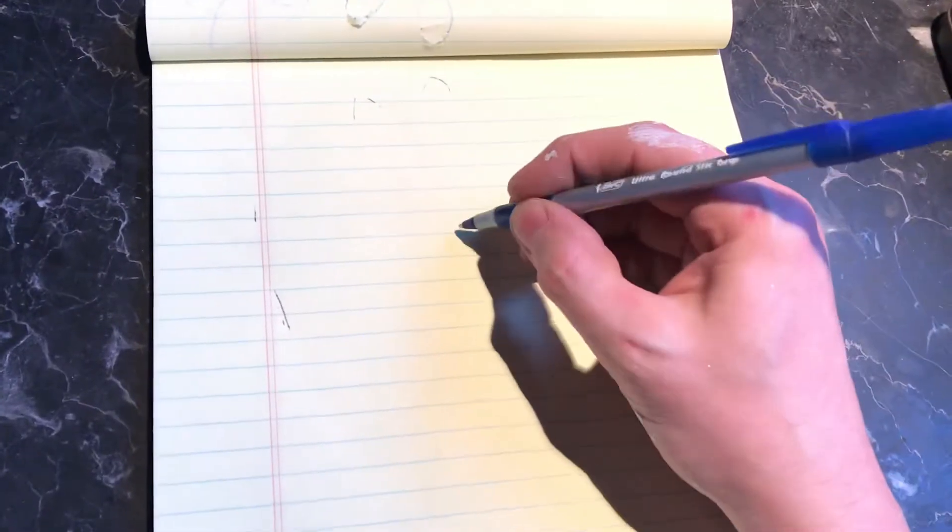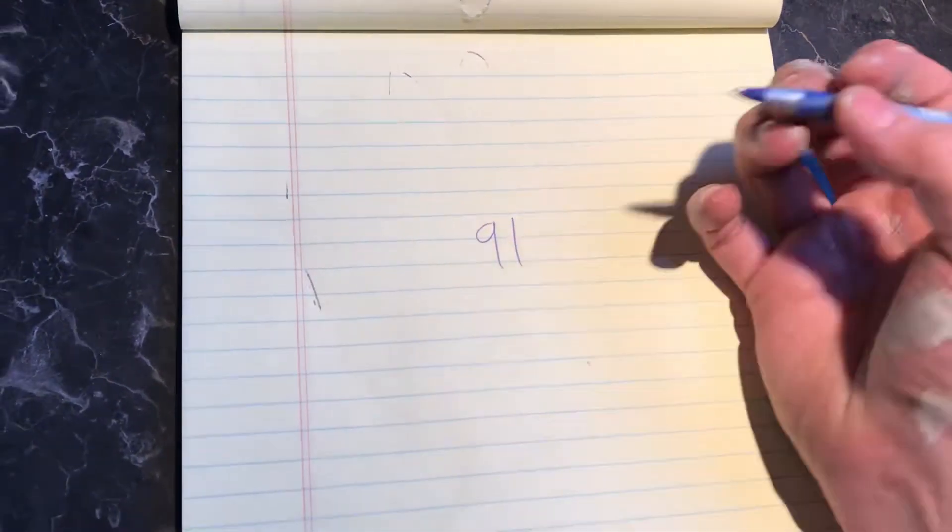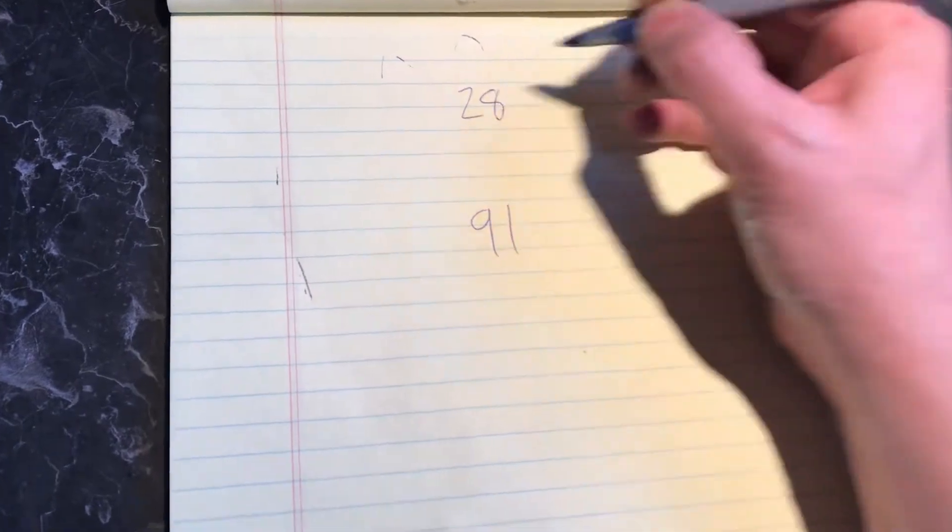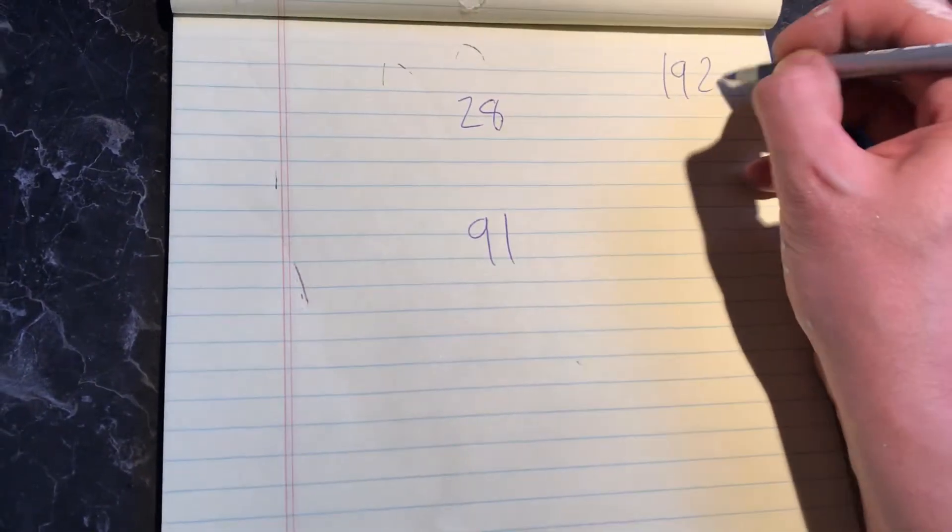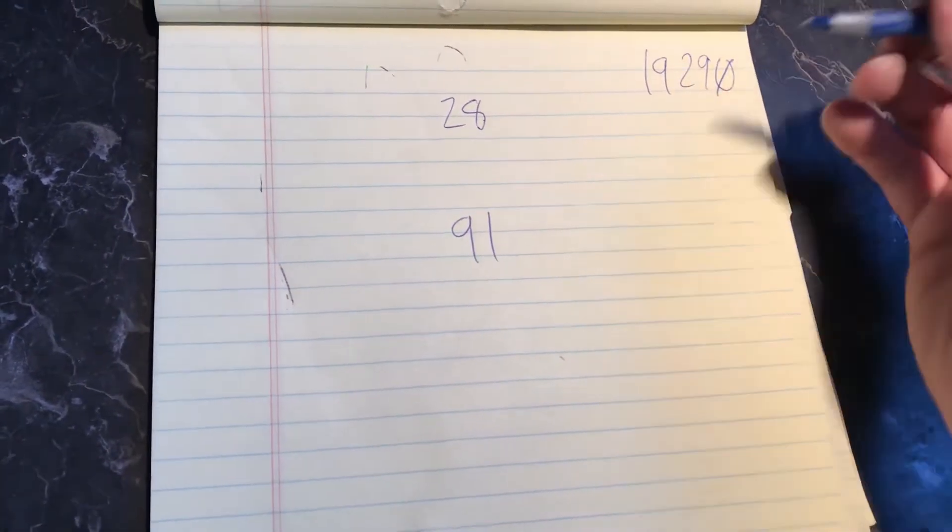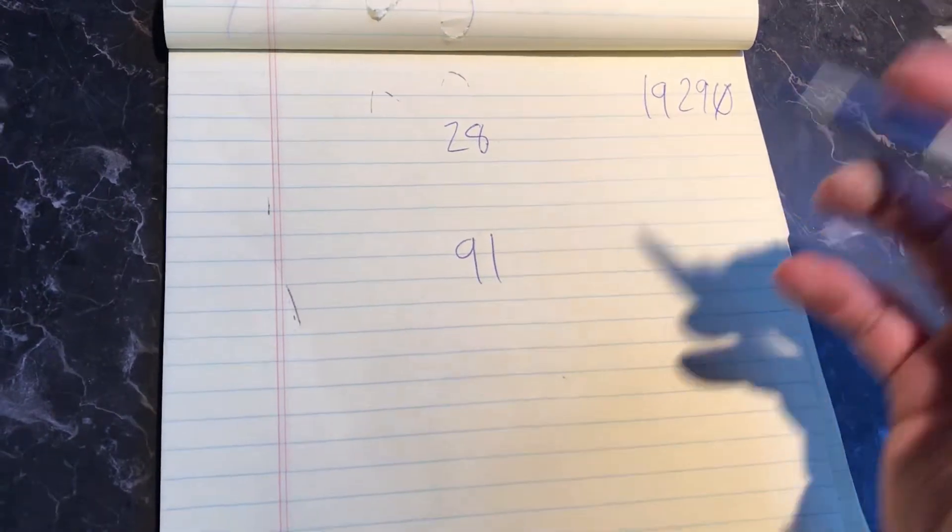I think I found a third way. So we started with the 91 and then we have the 28. The number we're looking for is 19,290 because that's the number of magnets needed in the solution.